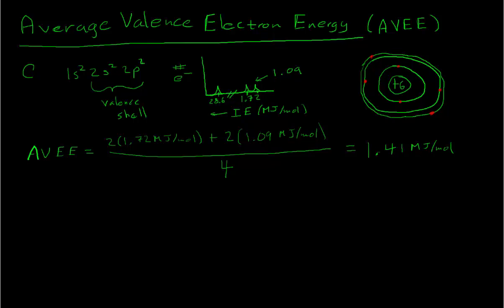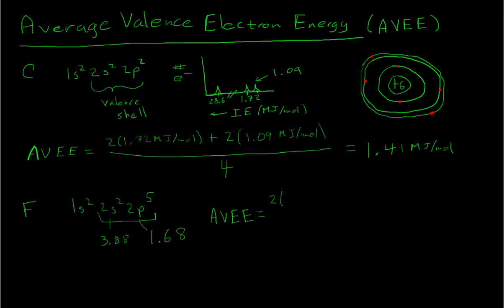We can do the same thing for other atoms. For fluorine, the n=2 valence shell has 7 electrons. The ionization energies from the photoelectron spectra for the two energy levels are 3.88 and 1.68 megajoules per mole. We calculate the AVEE by averaging the ionization energies of all valence electrons: 2 electrons at 3.88 plus 5 electrons at 1.68, divided by 7 total valence electrons, giving a value of 2.31 megajoules per mole.